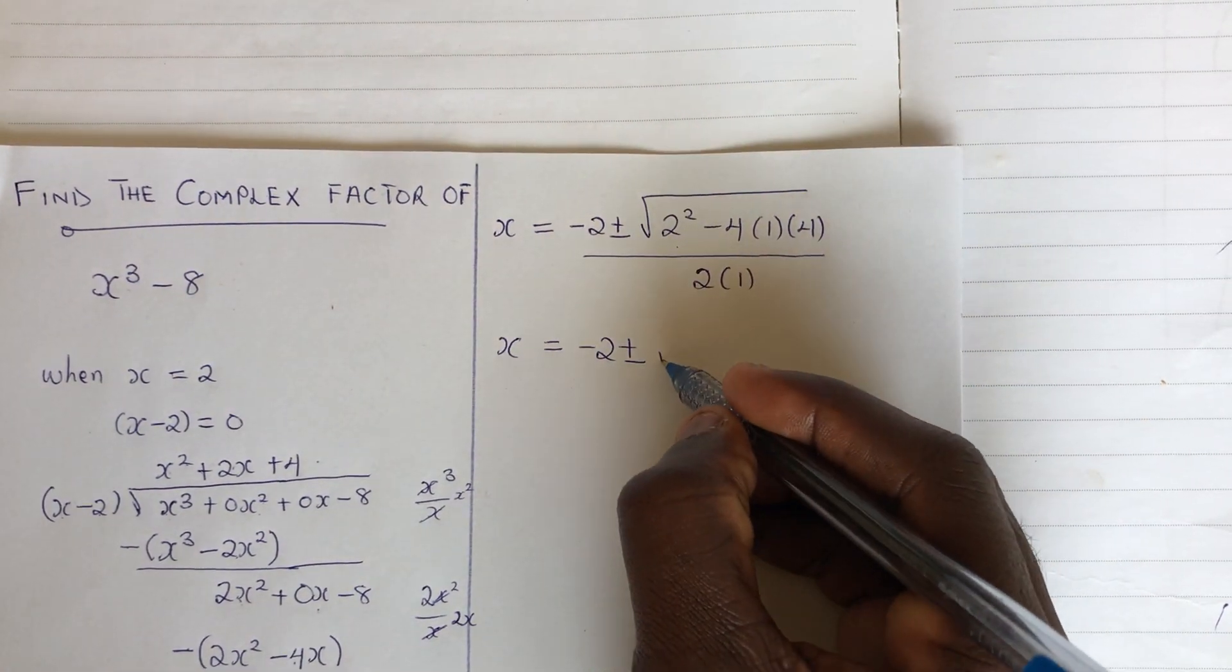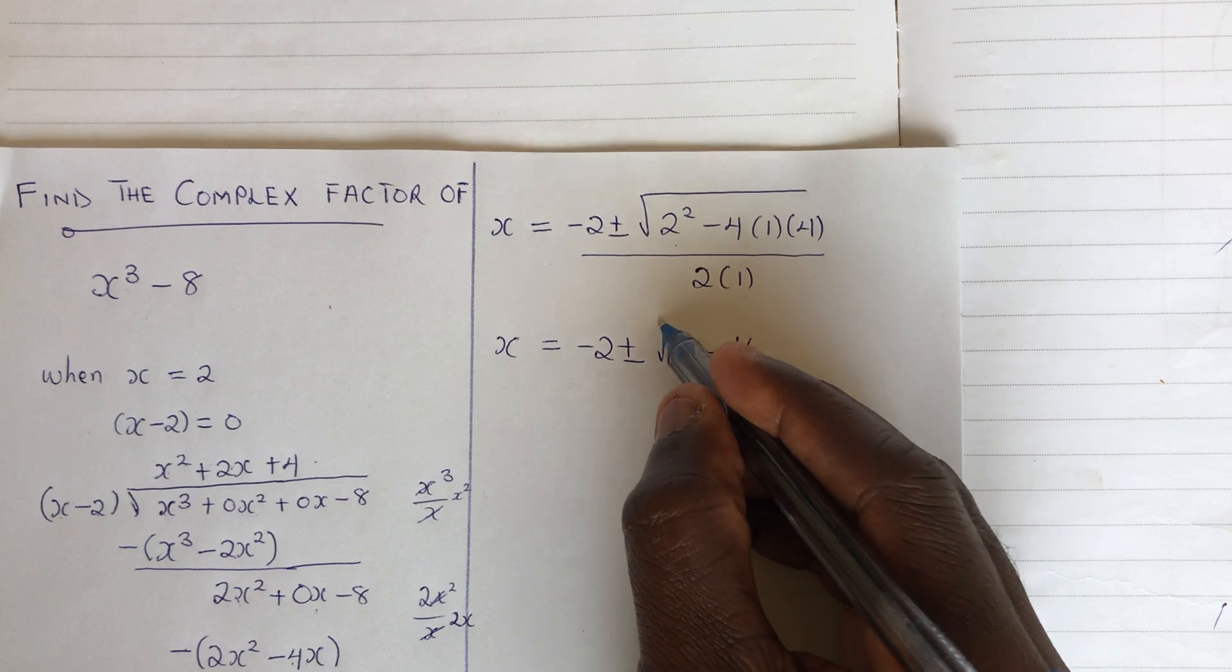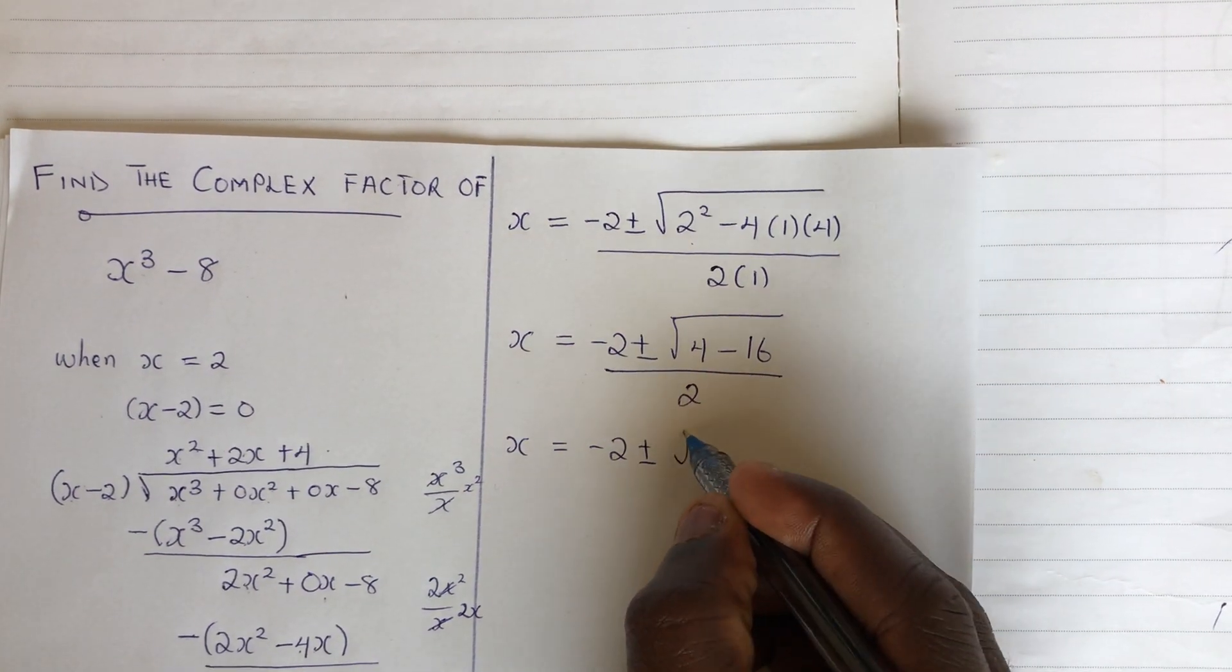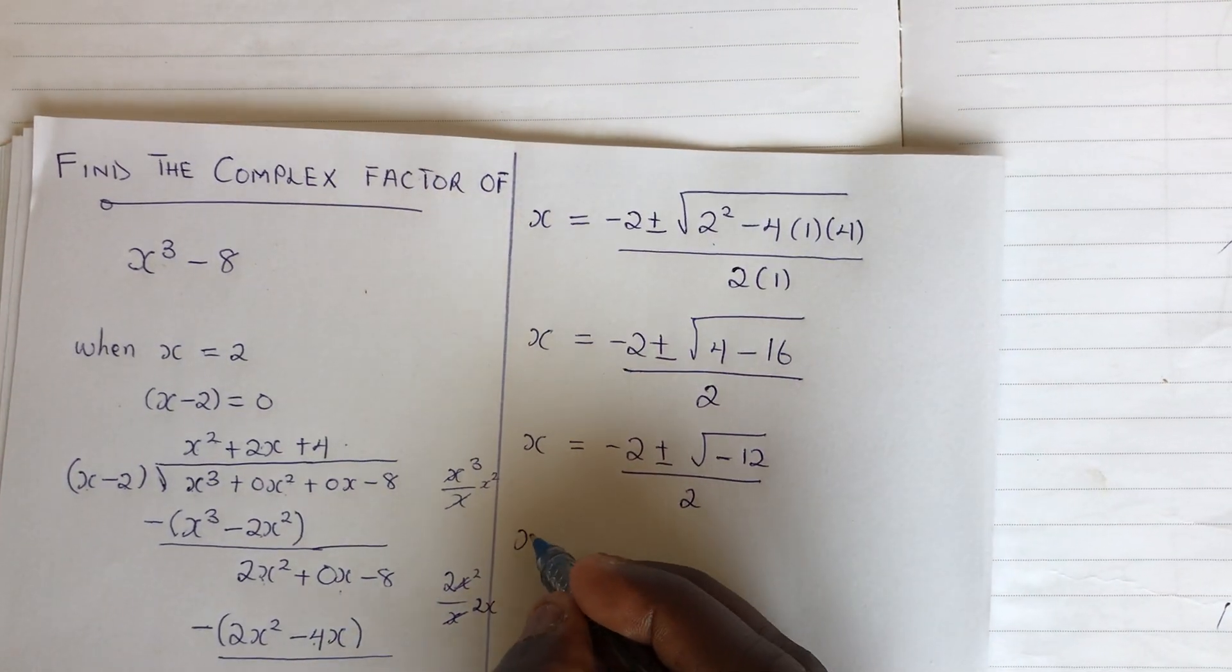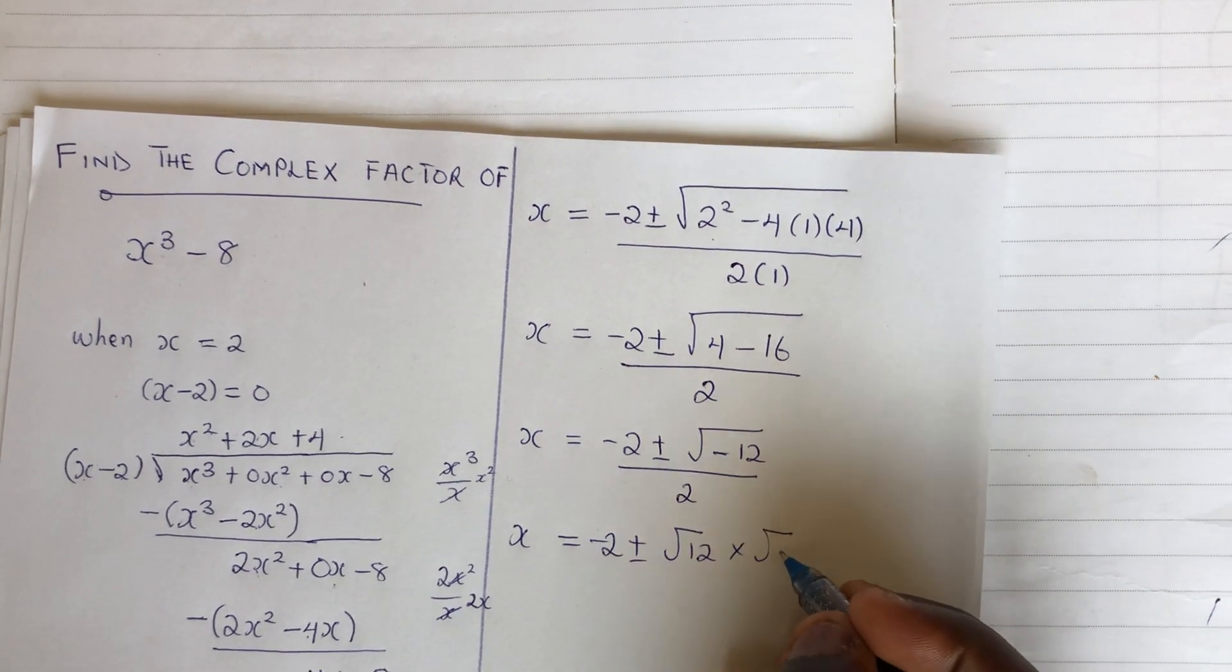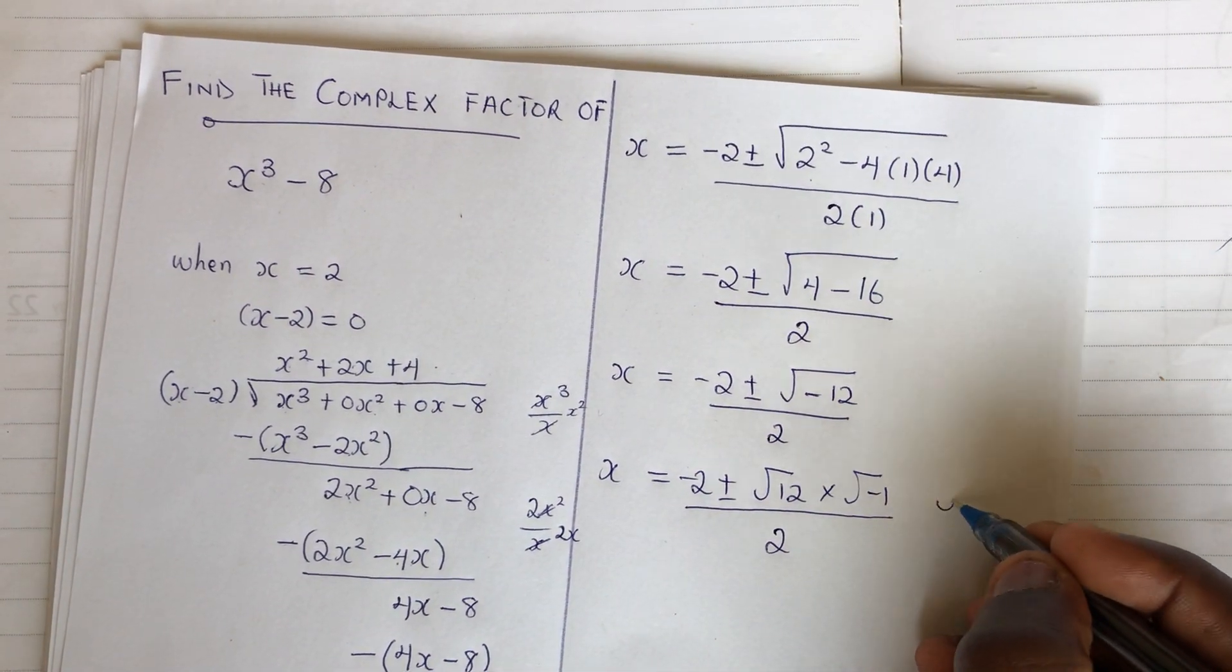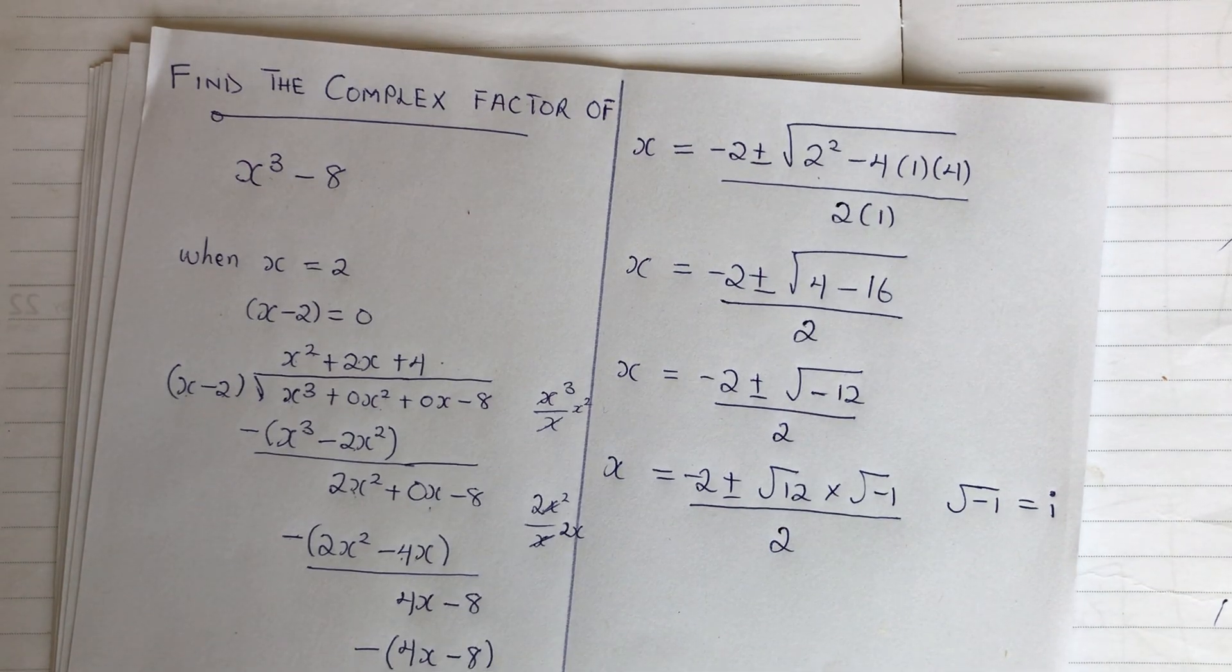So we have x equals minus 2, plus or minus root of, this will give us 4, this times this minus 16, all out of 2. So when we continue, we have x equals minus 2, plus or minus root of minus 12, all out of 2. Now, we learned that this will give us minus 2, plus or minus root of 12 times root of negative 1. Just for the sake of those of us who are still having issues, we divide this by 2. But note that root of negative 1 is the same as i, the complex unit.